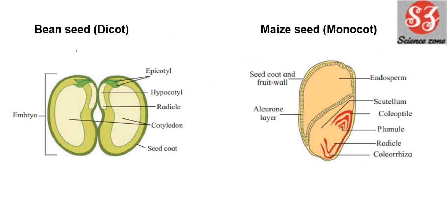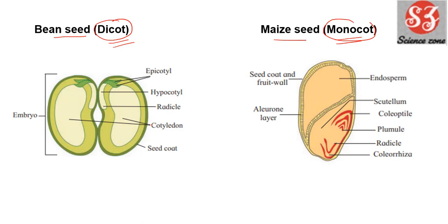Next is bean seed and mace seed. Bean seed comes under dicot and mace seed comes under monocot. So dicot seed and monocot seed — these two structures you will remember: bean seed and mace seed.